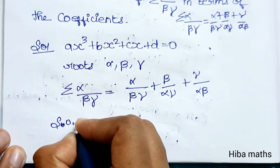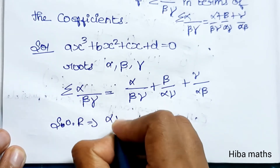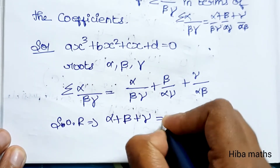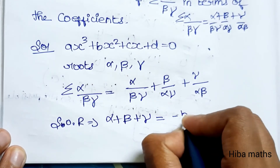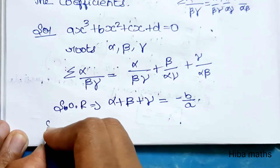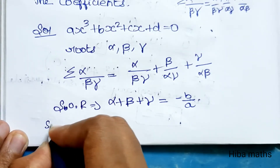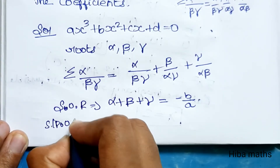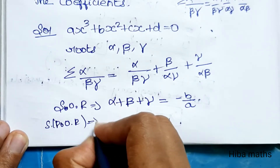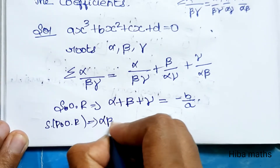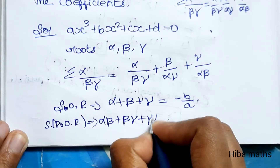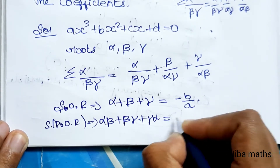The sum of roots: alpha plus beta plus gamma equals minus b over a. The sum of the product of roots taken two at a time — alpha·beta plus beta·gamma plus gamma·alpha — equals c over a.